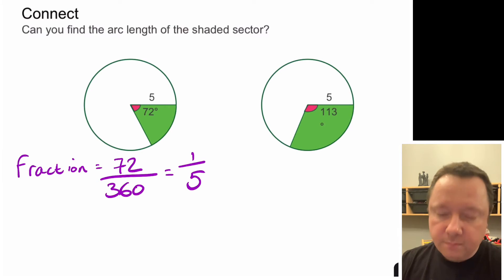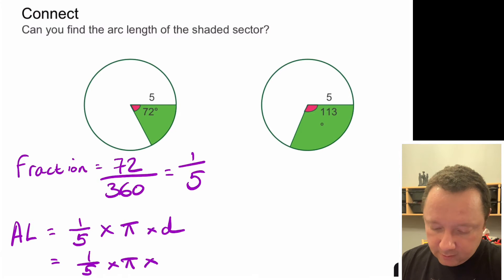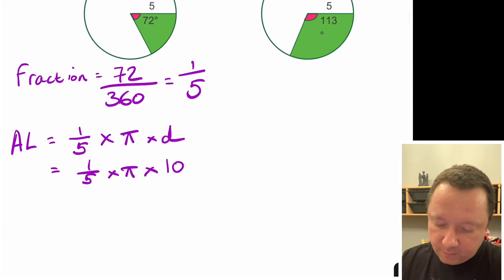72 out of 360 is a fifth. 5 72s make 360. So that means that the arc length which we'll call AL is just a fifth of the circumference. A fifth times pi times the diameter. Now the diameter remember is all the way across so it's not 5, it's 10. So it's a fifth times pi times 10. A fifth of 10 is 2 so it must be 2 times pi, 2π.